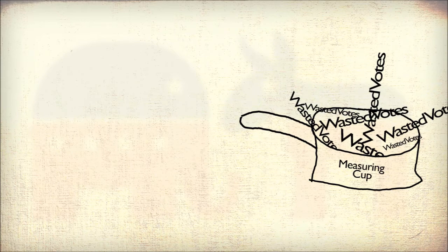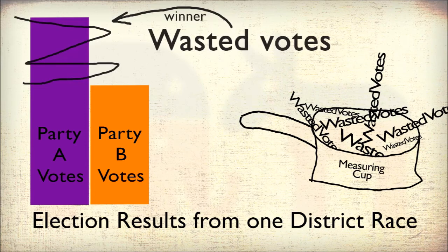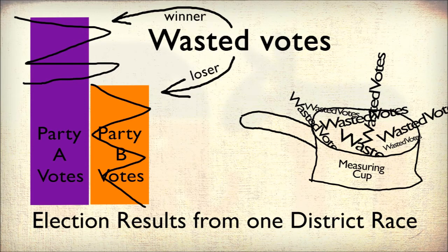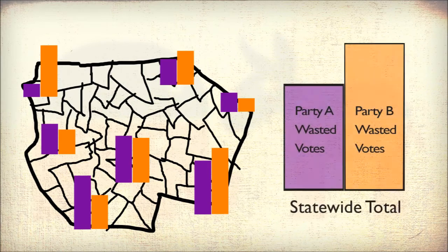Wasted votes come from the concept that the winner of an election did not need all of their excess votes — they needed only enough to win. And the loser did not need any of their votes because the loser lost, so those votes are considered wasted. Every district statewide will have wasted votes from both parties, and these wasted votes will vary from district to district, but when combined as a statewide total they tell an important story.